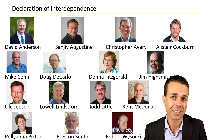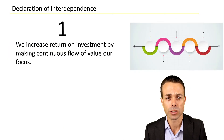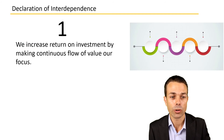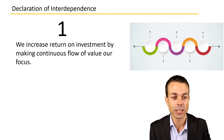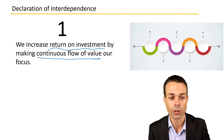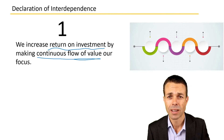But what is the Declaration of Interdependence? It's six principles. The first: we increase return on investment by making continuous flow of value our focus. What does that mean?